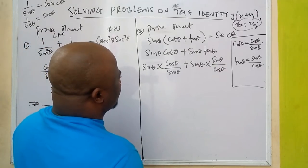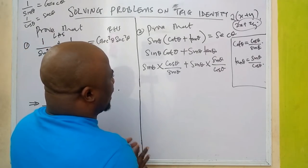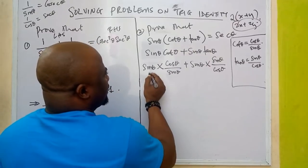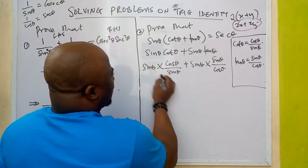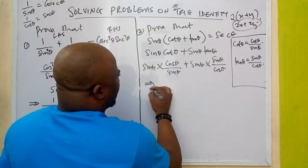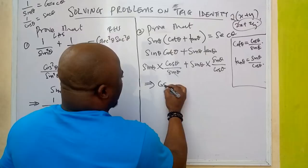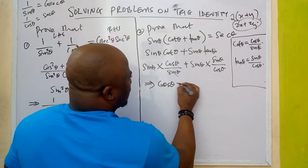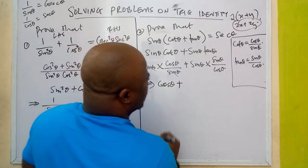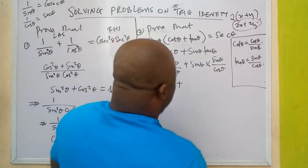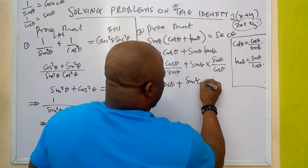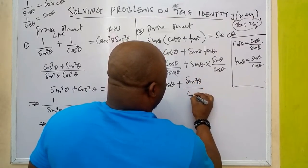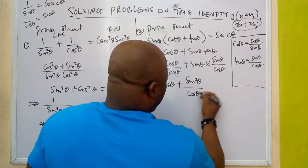Here, something has happened. The sinθ in the first term can cancel with the sinθ denominator. So we are left with cosθ, plus sin²θ all over cosθ for the second term.